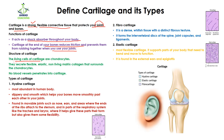If we talk about the structure of cartilage, the cartilage consists of living cells which are known as chondrocytes. The chondrocytes are going to secrete a flexible, elastic, non-living matrix known as collagen, and this collagen is going to surround the chondrocytes. So the chondrocyte produces the collagen, and this collagen surrounds the chondrocyte.